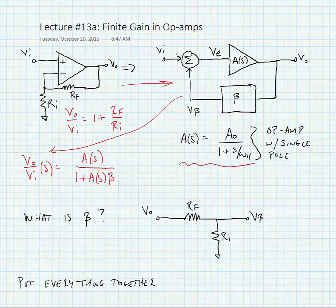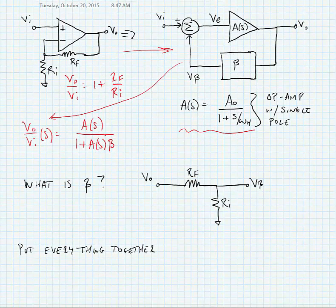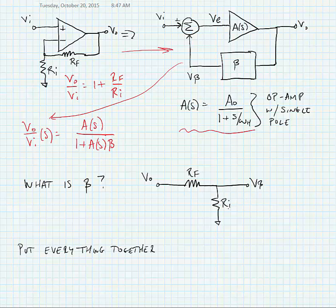The question is, what is beta? Well, beta is just given by the feedback circuit, and it is a voltage divider in this case consisting of RF and RI.